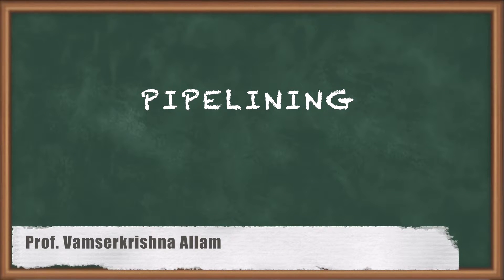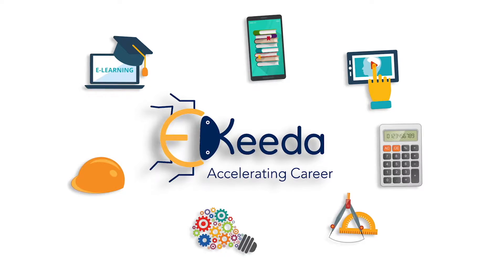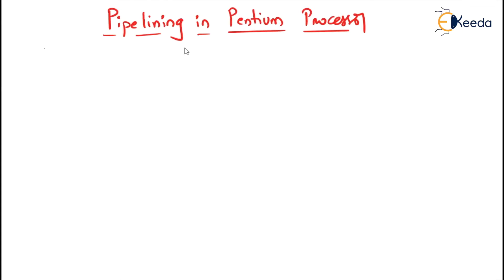Hi, my dear friends. Today we will discuss about pipelining in the Pentium processor. In the last class we discussed the superscalar architecture and some features of the Pentium processor. In this class we will discuss about pipeline — how pipelining will be done in the Pentium processor. The Pentium processor has a five-stage integer pipeline and an eight-stage floating-point pipeline.